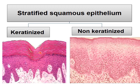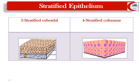This is a photomicrograph showing the two types of stratified squamous epithelium: the keratinized type with a thick keratin layer at the top, and the non-keratinized type.